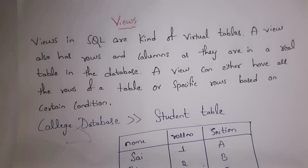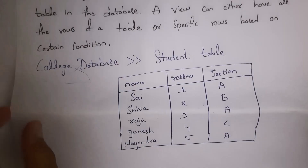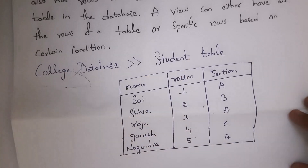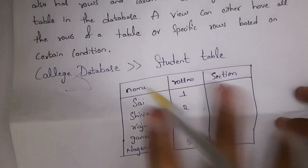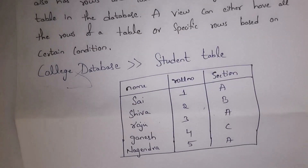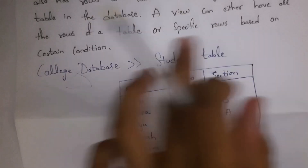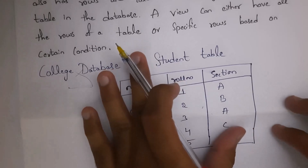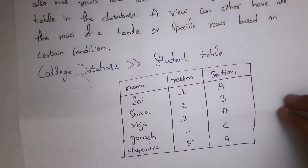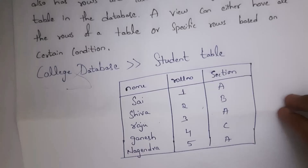A view is nothing but a virtual table. For example, let us consider there is a college database. Inside the college database there is a student table. Now what I want to do is create this student table again with the same data. To do that again I need to write code to create the student table and insert this data, which is a time-consuming process. To overcome this problem, we can use a view.